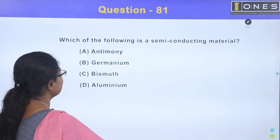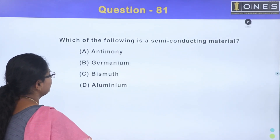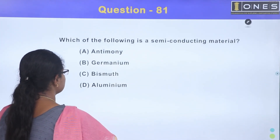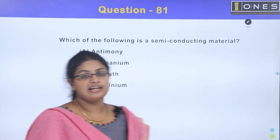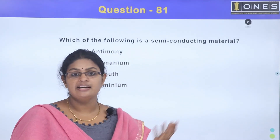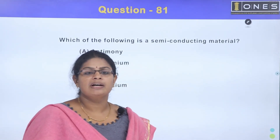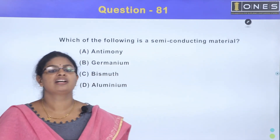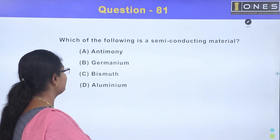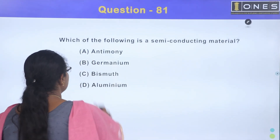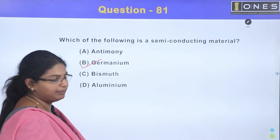Which of the following is a semiconducting material? Option A, antimony; Option B, germanium; Option C, bismuth; Option D, aluminum. Semiconducting materials have 4 valence electrons and belong to the carbon family. The answer is Option B, germanium, which is in the 14th group.